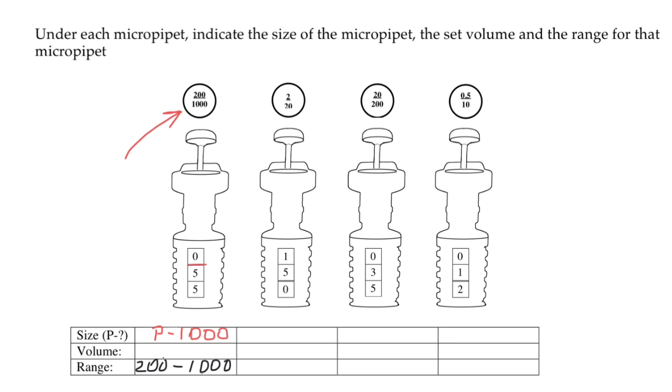This double line here means decimal point. We can have here zero or one. This is hundreds, and this is tens. So the display shows 550 microliters.